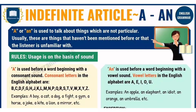'An' is used before words starting with vowel sounds and words where the consonant sound at the beginning is silent. For example: an umbrella, an egg, an hour, an honest man.